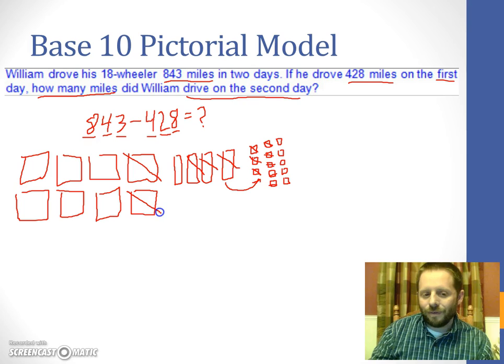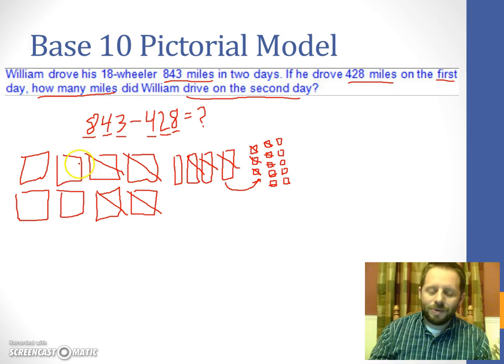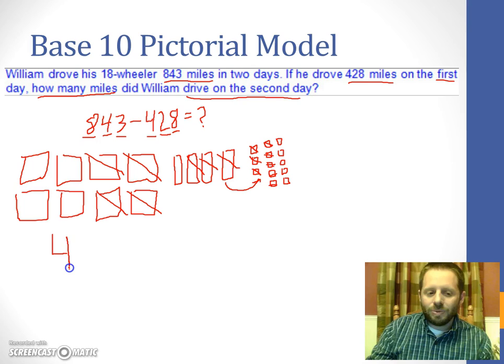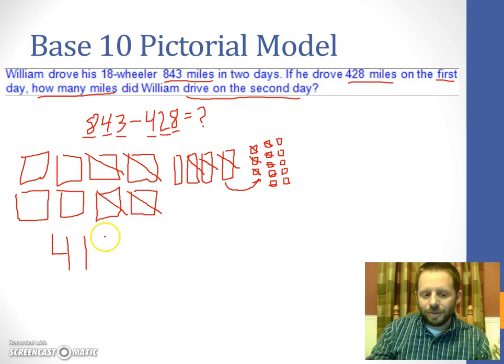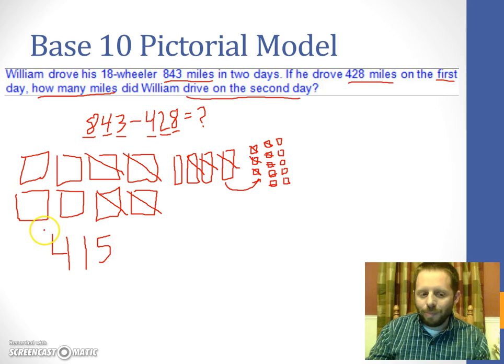So that's it. We removed 428 from our base 10 blocks. So whatever remains is our answer. So we have 4 flats, so that's 400, 1 ten, and we have 5 of the little unit blocks. So that leaves 415 miles driven on the second day.